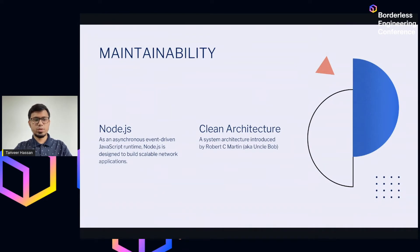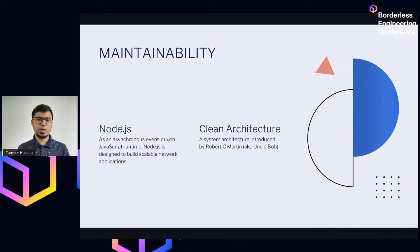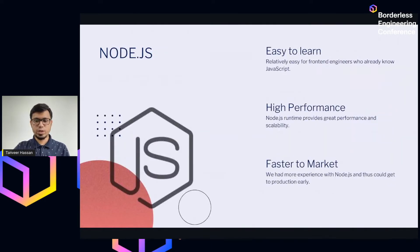Moving on to maintainable design — we chose Node.js for several reasons. We decided to go with Node.js mainly because we had relatively more hands-on experience with it. We went with clean architecture and decided to use Express.js rather than an opinionated framework or project structure. We created our own clean architecture project structure. For those who don't know clean architecture, I'll describe it further shortly.